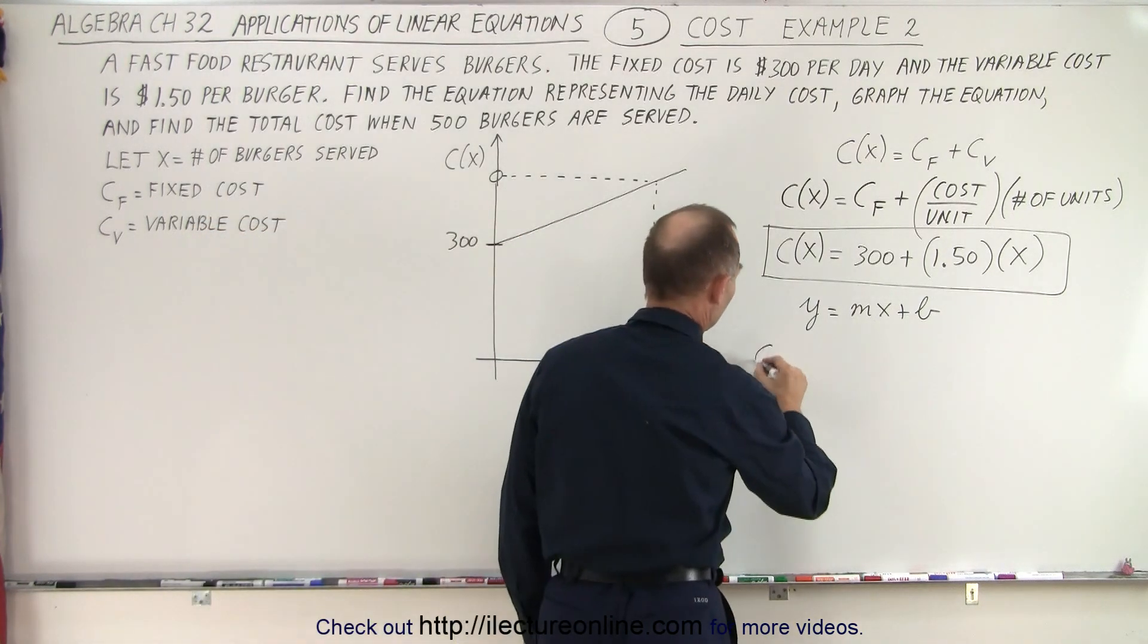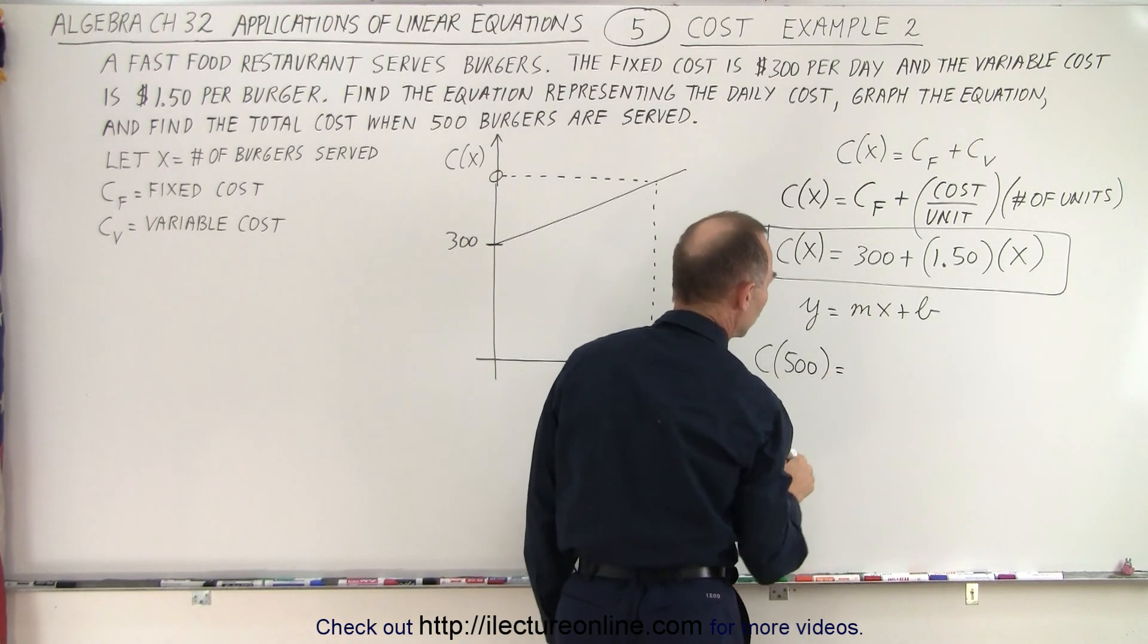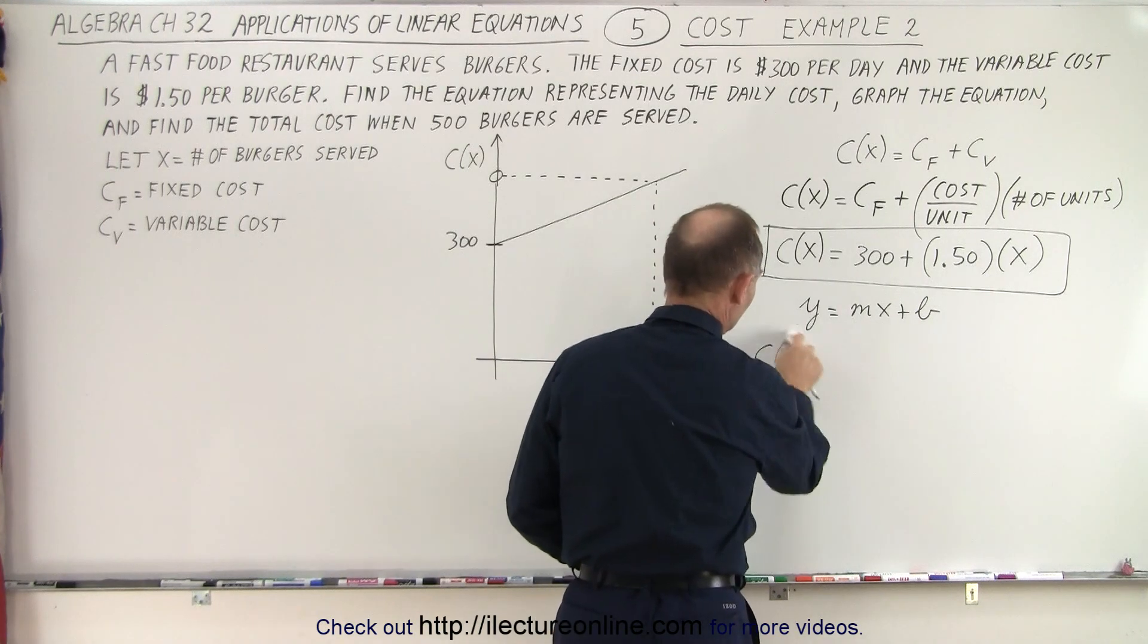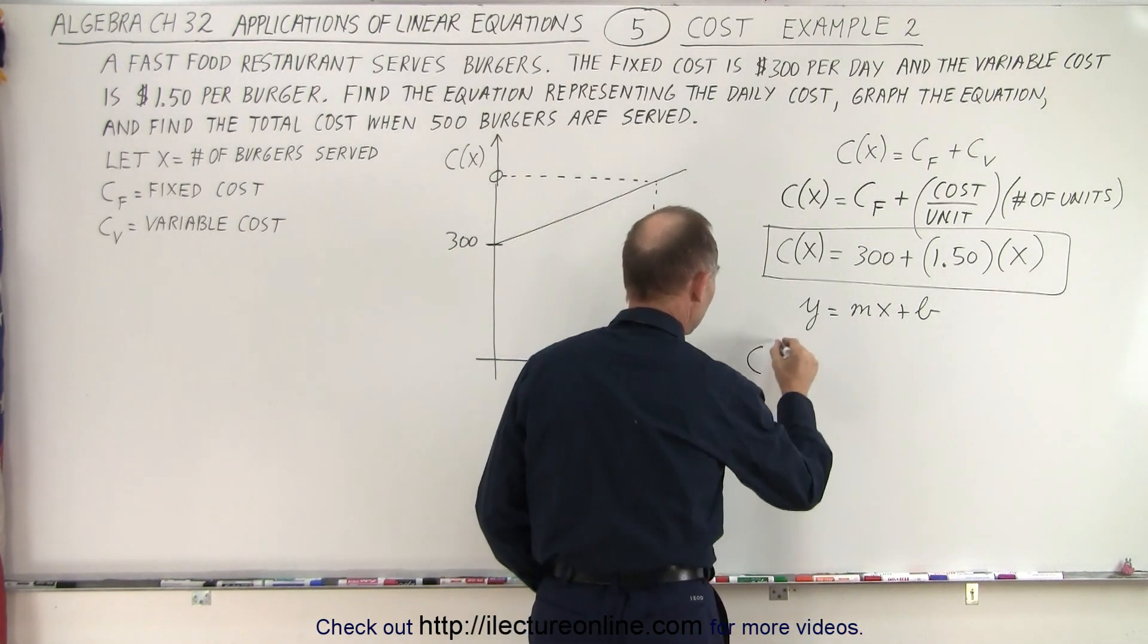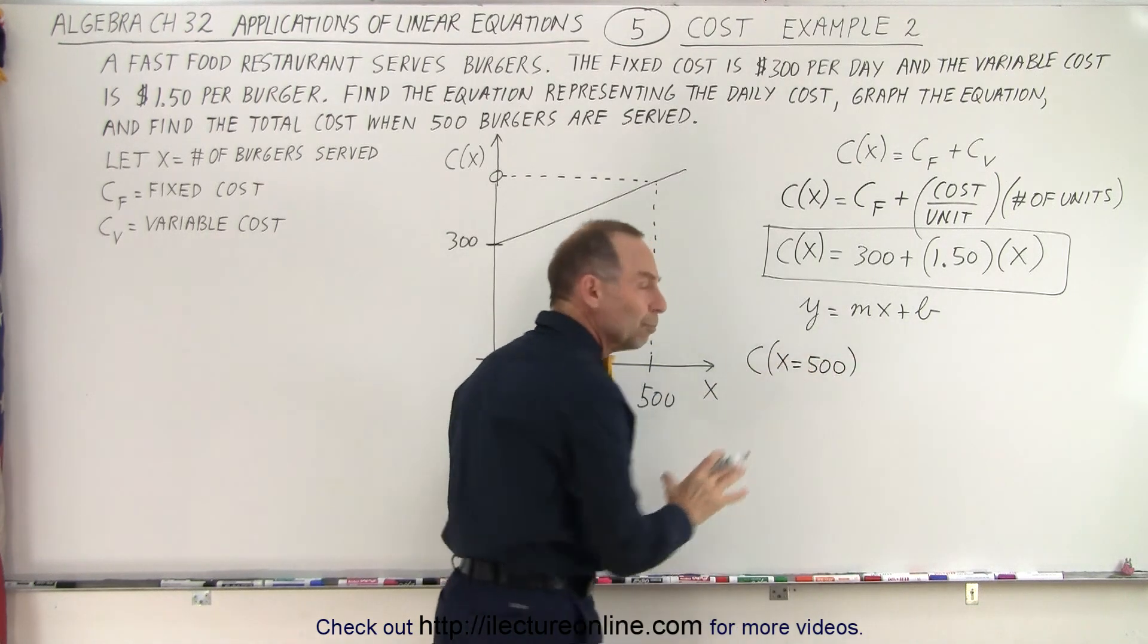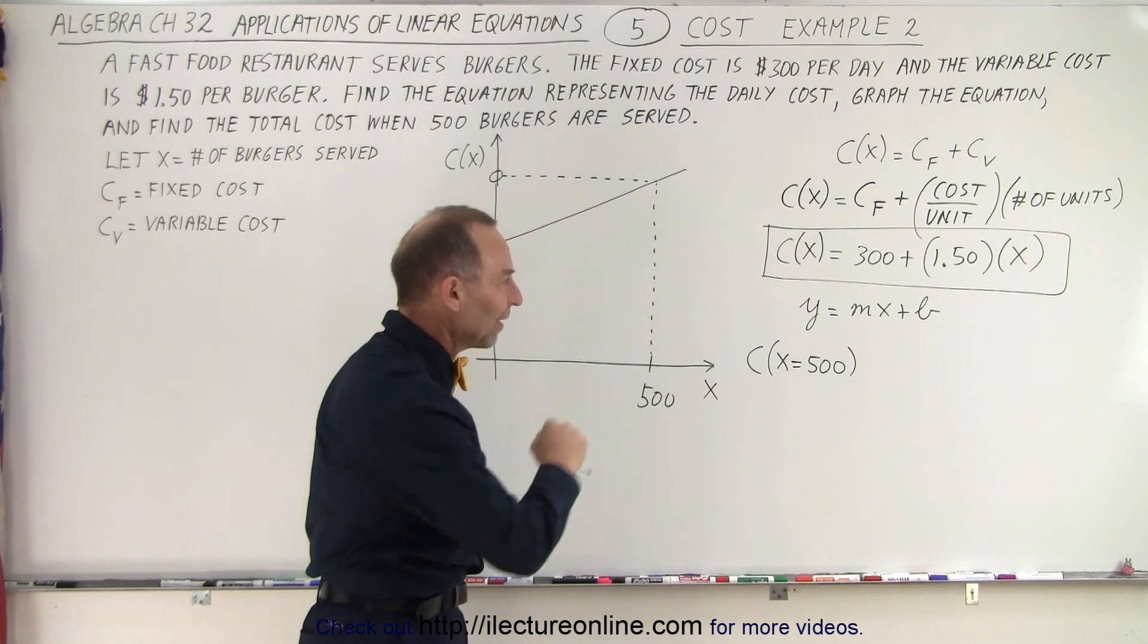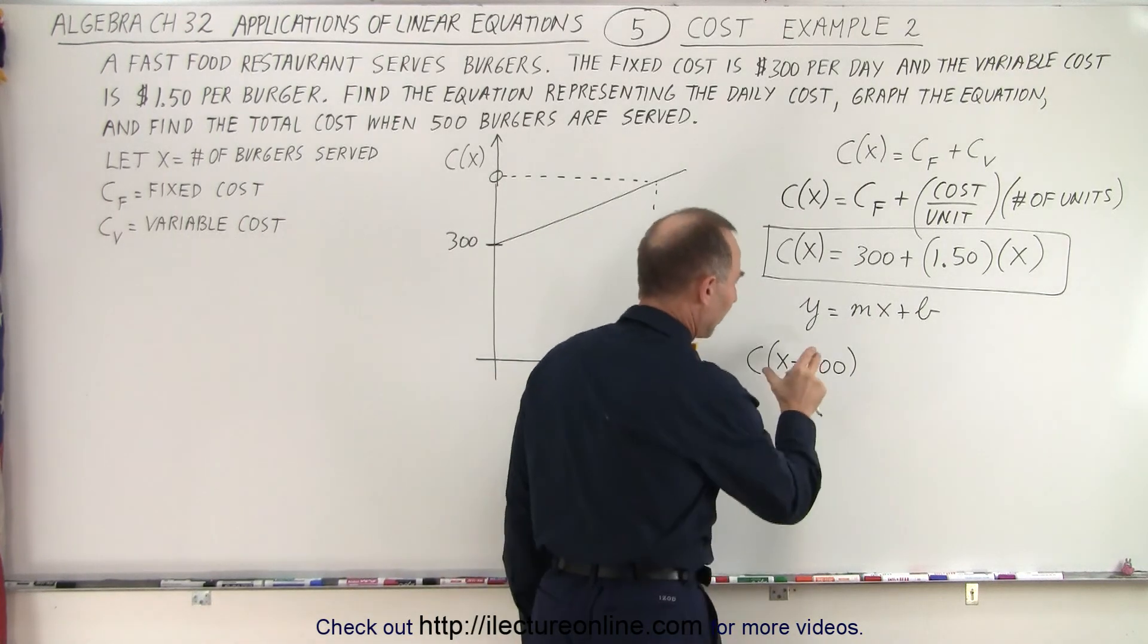So the number of burgers being 500 will give us a cost relative to that, which is equal to... and you know what, I should have probably written it like this, even though this is perfectly correct. I prefer to write it like this. When x equals 500, it just makes it more clear. We understand what we're doing here. x takes on the value of 500, and x represents the number of burgers served.